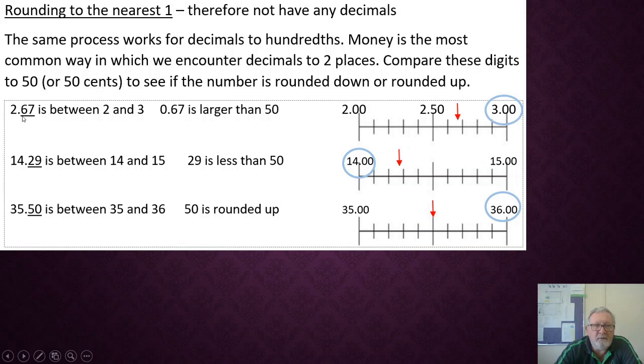So two and sixty-seven hundredths, or if you wanted to think of it in terms of money, $2.67, it's between two and three dollars. The sixty-seven hundredths, or sixty-seven cents if it was money, is bigger than 50, larger than 50, so it's going to be rounded up to three. Fourteen and twenty-nine hundredths is between fourteen and fifteen, but closer to fourteen, so rounding down. And thirty-five and fifty hundredths is between thirty-five and thirty-six. Fifty is always rounded up, so it rounds up to thirty-six.